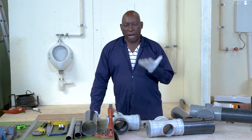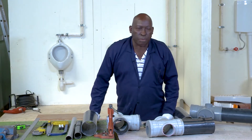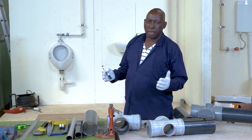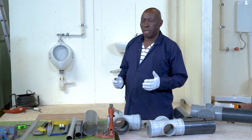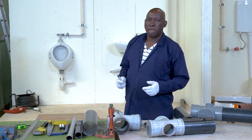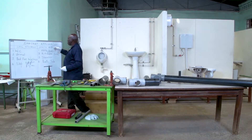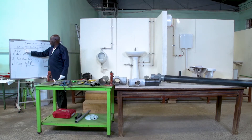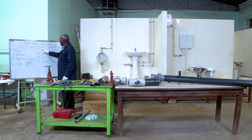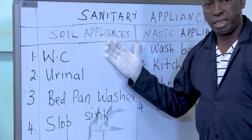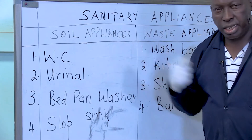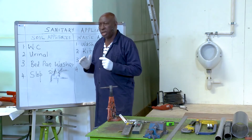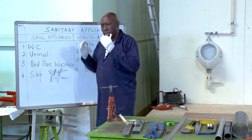This afternoon we are going to look at the system above the ground. But before we do that, I would like to remind you of the types of sanitary appliances that you have already seen. All sanitary appliances are divided into two categories: soil appliances and waste appliances.